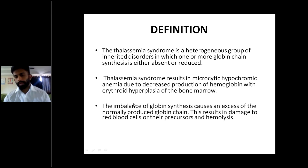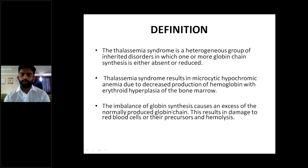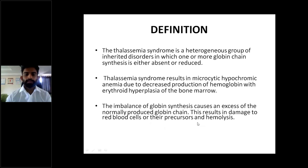On bone marrow examination, erythroid hyperplasia will be seen. The imbalance of globin synthesis causes an excess of the normally produced globin chain. This results in damage to red blood cells or their precursors and hemolysis. The main pathophysiology is the imbalance of globin synthesis leading to accumulation of normally produced globin chains, which results in RBC damage and eventual hemolysis.